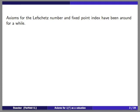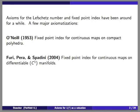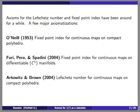These axiom systems have been around for a while, for the Lefschetz number and also the fixed point index. I want to highlight a few major axiomatizations. The first one was by O'Neill in 1953; he gave axioms that uniquely described the fixed point index for continuous maps on compact polyhedra. There are two more recent ones: one is by Furi-Pera-Spadini, giving axioms for the fixed point index on differentiable manifolds, and Arkowitz and Brown gave another set of axioms for the Lefschetz number for continuous maps on compact polyhedra.